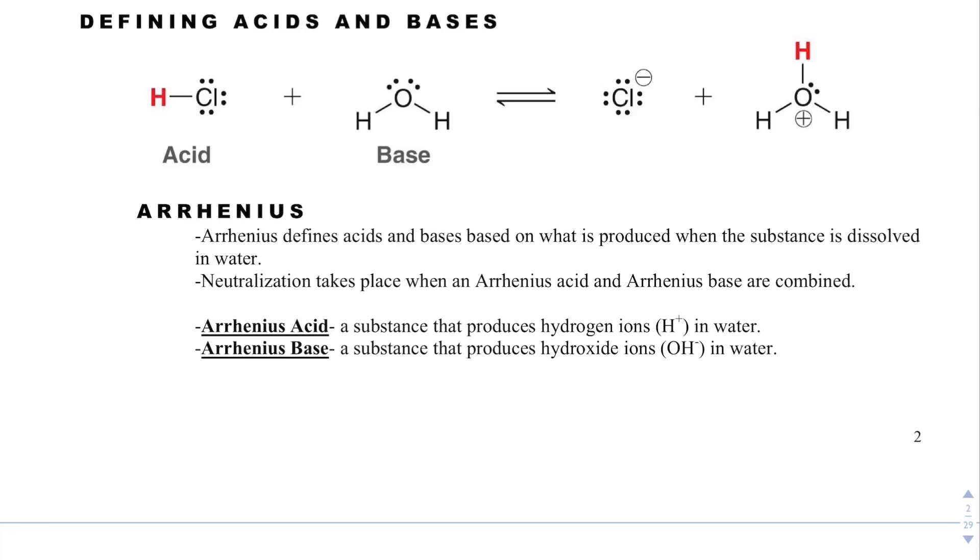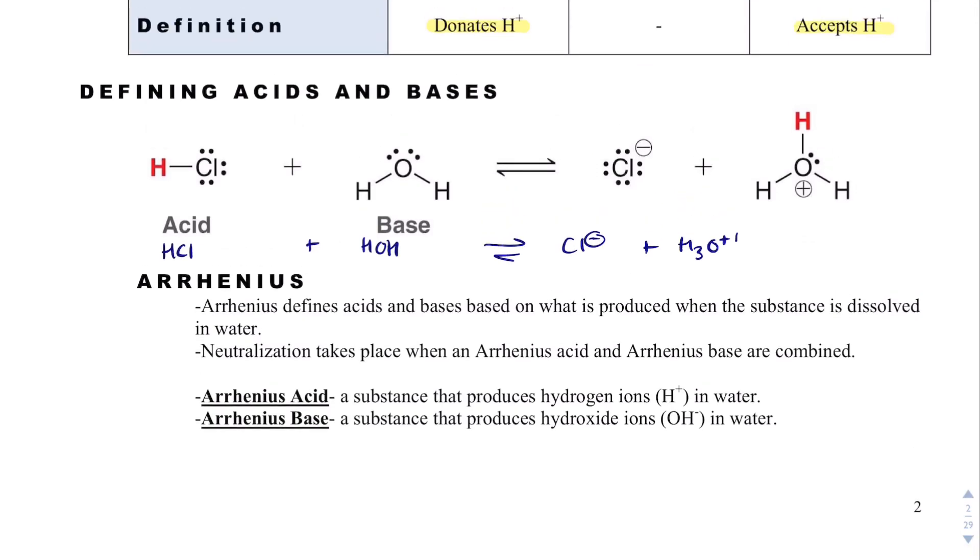So let's define acids and bases. We have hydrochloric acid here, HCl. We're reacting it with water, HOH. And in the process, we get Cl minus plus hydronium. If we think about our definitions, that acids donate H+, where bases accept H+, both HCl and HOH water have H's. So I don't know which one's going to be the acid and which one's going to be the base. I have to watch how this red H moves. So this red H gets donated.